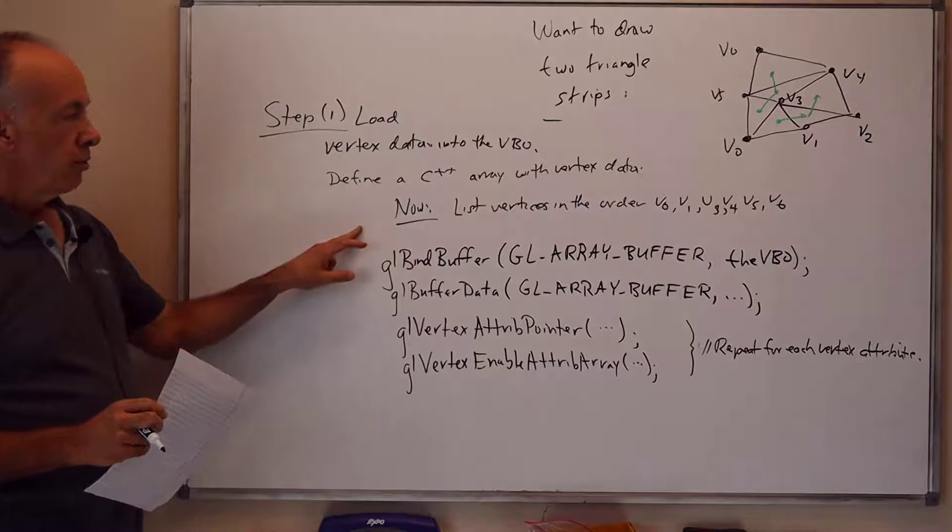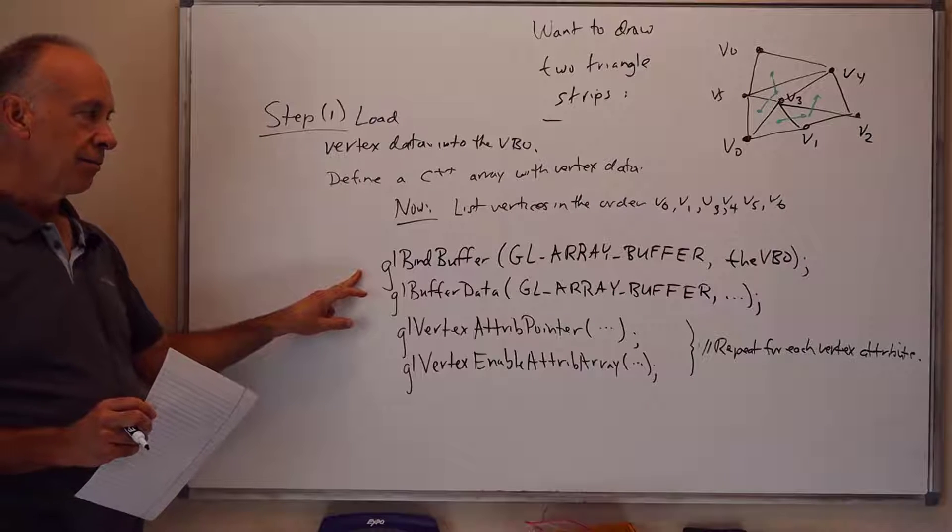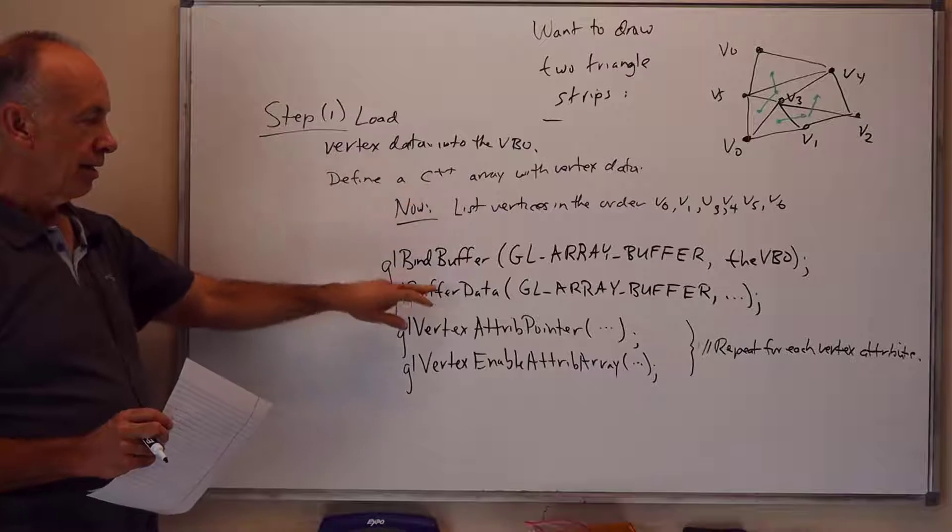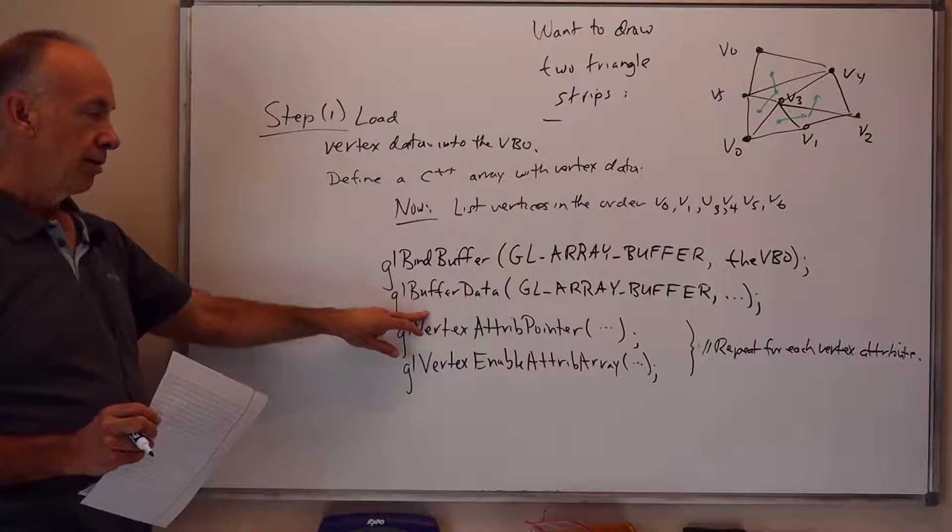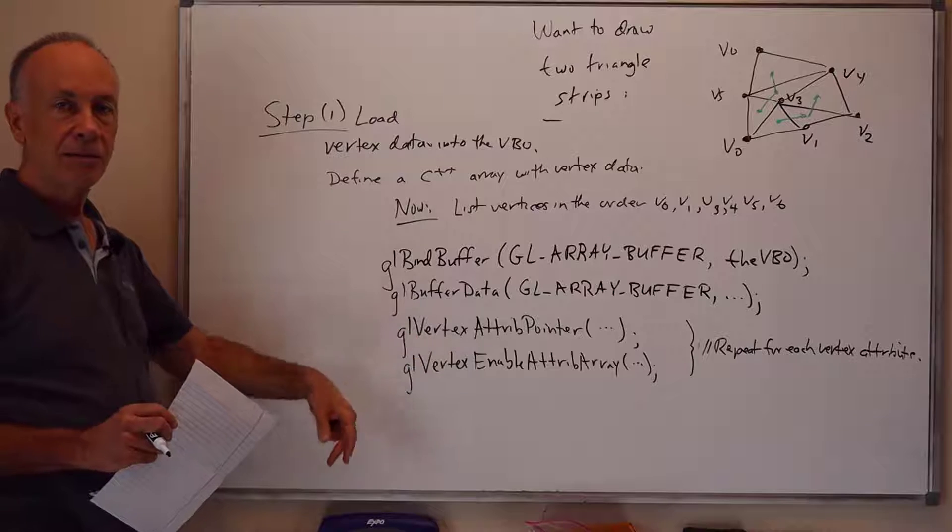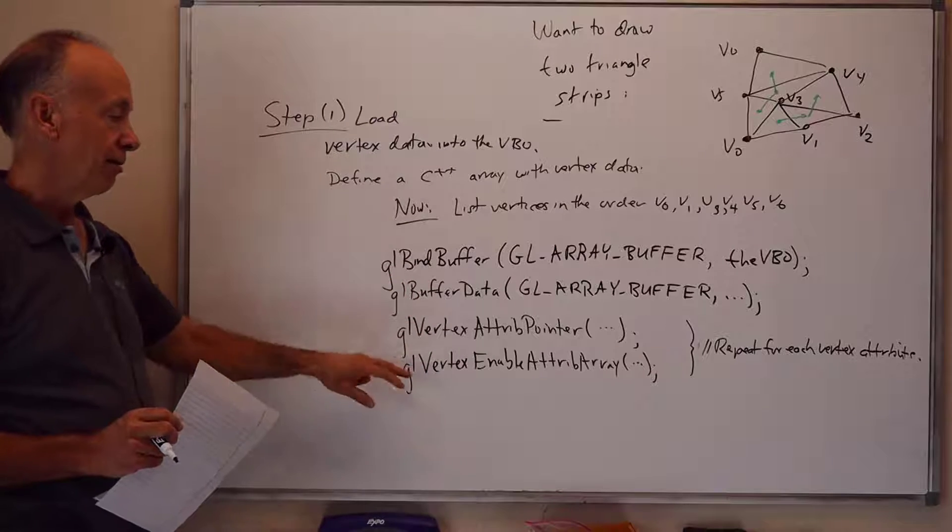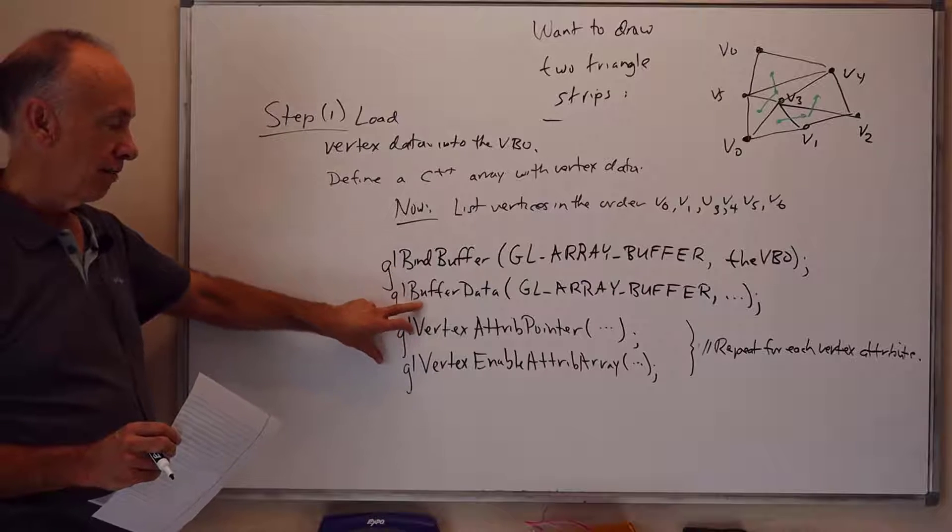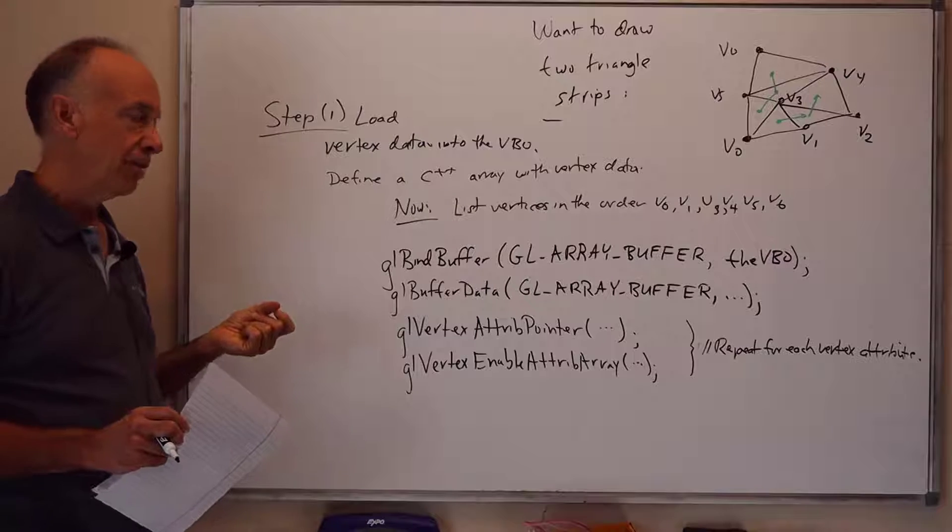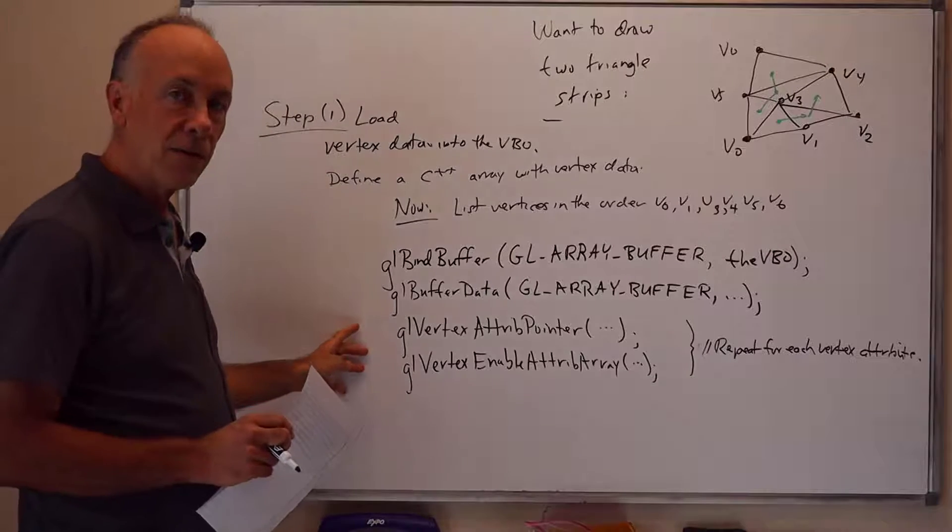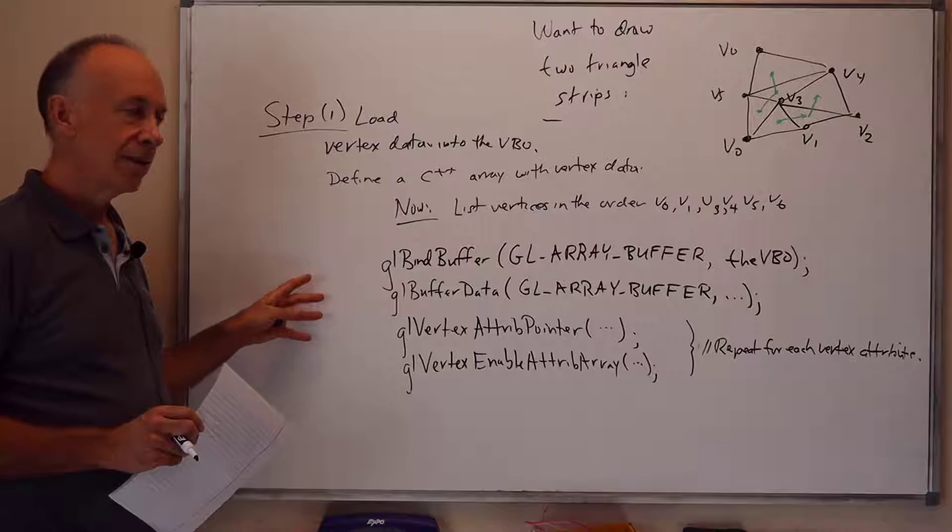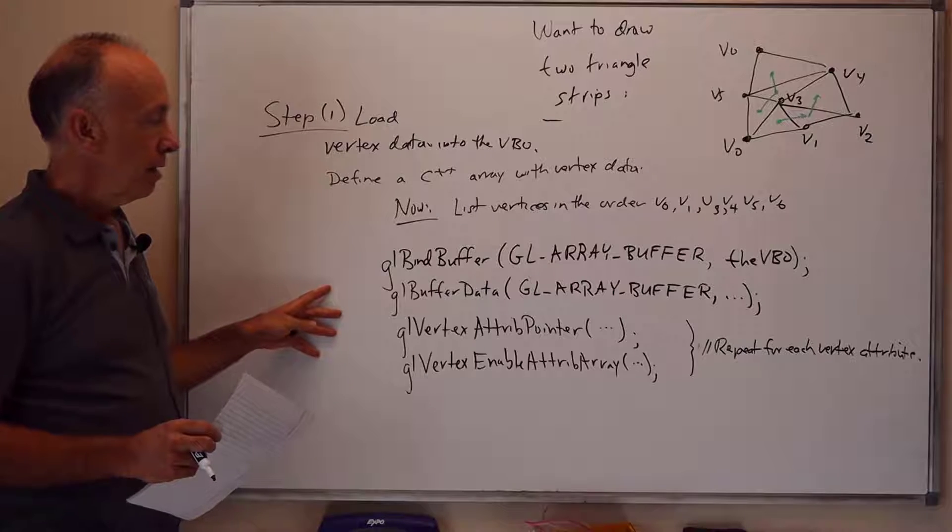The usual commands are: we bind the VBO under the name GL_ARRAY_BUFFER, we load the data from the C++ array into the VBO using the command GLBufferData. We then, for each vertex attribute such as position or color or texture coordinates or normals, we call GLVertexAttribPointer and GLEnableVertexAttribArray to tell the VAO where the state is stored in the VBO. This is the same whether we're using GLDrawArrays or GLDrawElements.